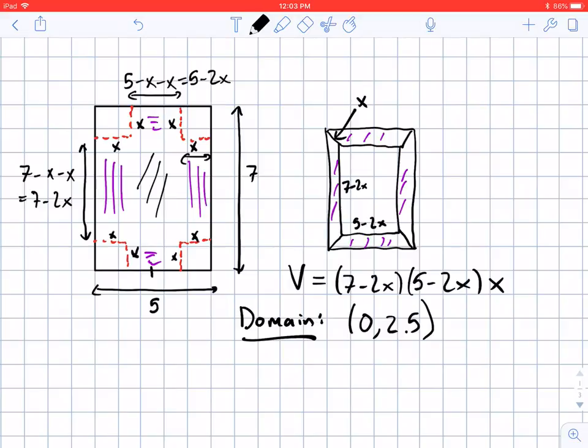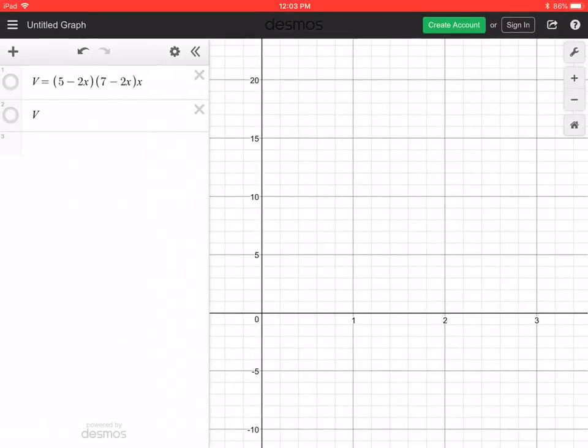Okay so just good to keep in mind when we're looking for maxes and mins. Now let's move over to a graph of the function. I've plotted here in Desmos V equals 5 minus 2X times 7 minus 2X times X and we'll turn that on. I don't want to go past 0 or 2.5 and you can see on the graph that when X is 0 the volume is 0 because there's no box, and when X is about 2.5 you also see it crossing 0. So in fact I don't have to go past that either.